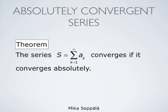The condition of being absolutely convergent for a series is stronger than that of normal convergence. We have the following theorem: the series s equals summation k from 1 to infinity of ak converges if it converges absolutely.